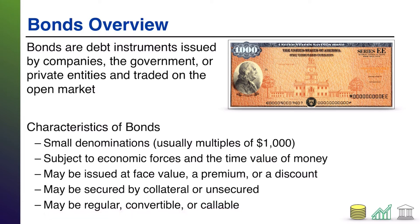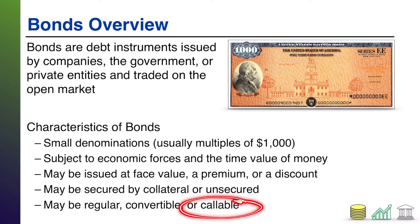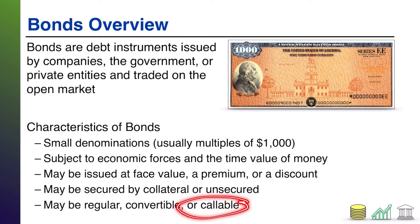Bonds may be regular, convertible, or callable. Convertible bonds have an option giving the holder the ability to convert that bond to some sort of equity or stock, so if the holder decides they'd rather be an owner than a debt holder, they can convert. Callable bonds give the issuer the option to pay off the bond early during the maturity period, essentially saying, 'I want to go ahead and pay this off — I don't want to keep paying you interest.' If you don't have these features, you're a regular bond: you issue, stick to the payment terms until maturity, and pay it off.